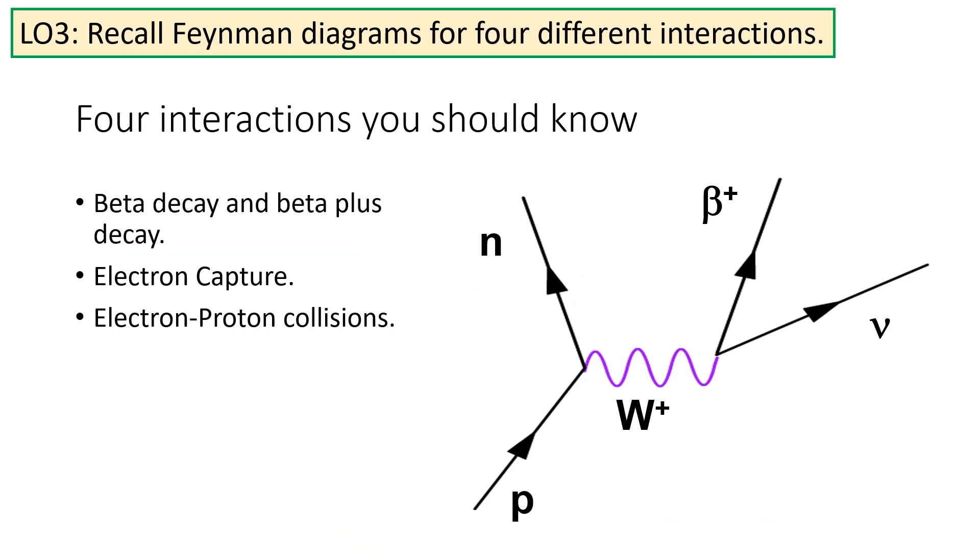You should know four different interactions like this for the exam. It's worth you memorizing these interactions so that you can state them quickly in the exam. These are beta plus and beta minus decay, electron capture and electron-proton collisions. Although that sounds like a lot, several of these diagrams are very, very similar to each other.